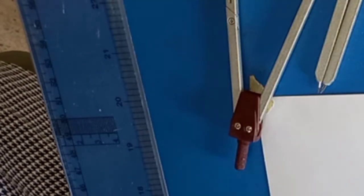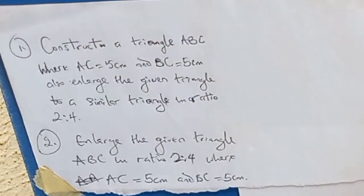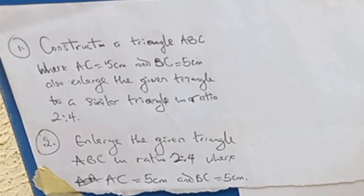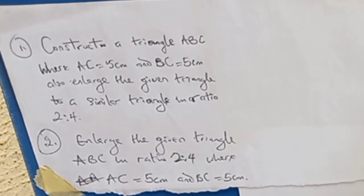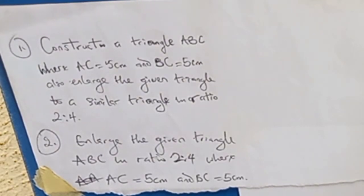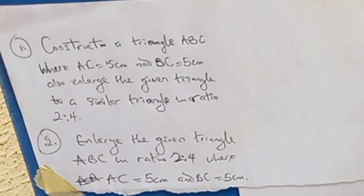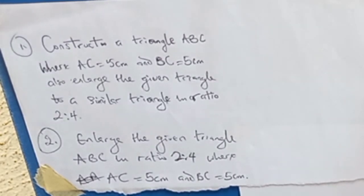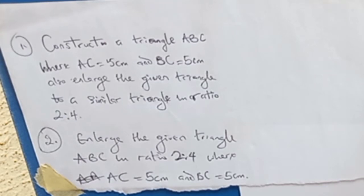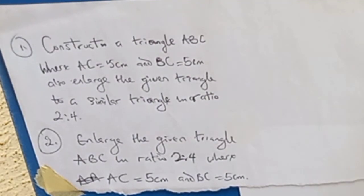Let's say a question is given: construct a triangle ABC where AC equals five centimeters and BC equals five centimeters, and enlarge the given triangle to a similar triangle in ratio two to four. The question can also be given in a different format: enlarge the given triangle ABC in ratio two to four where AC equals five centimeters and BC equals five centimeters. It's still the same question, just with the sentence rearranged.